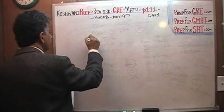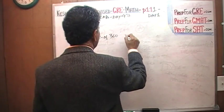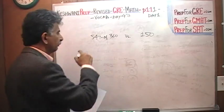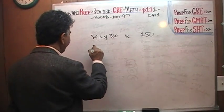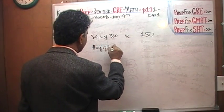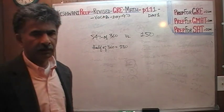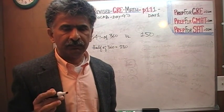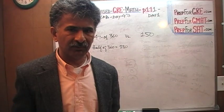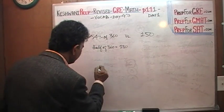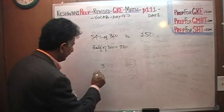They are asking us to compare 54% of 360 versus 150. Well, 54% is more than half. We know that half of 360 is 180. Don't depend on the calculator. Do it by hand—it will be quicker and simpler. 360 divided by 2: there's one 2 in 3, the remaining 1 becomes 16. Eight 2s in 16, zero 2s in 0. It's 180.